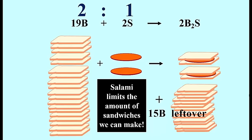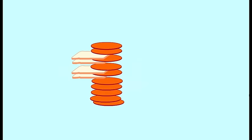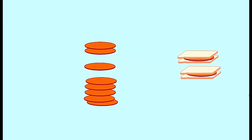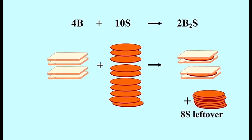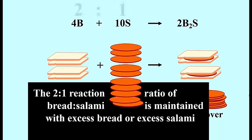And of course this can happen if we turn it around. With four bread and ten salamis, we're still stuck with that two-to-one ratio, and so we get two sandwiches. Now the salami is left over, and it is the amount of bread that limits the amount of sandwiches that can be produced. So here the bread is limiting. The two-to-one reaction ratio of bread to salami is maintained with excess bread or excess salami. Let's go to the lab and see what that looks like with a real chemical reaction.